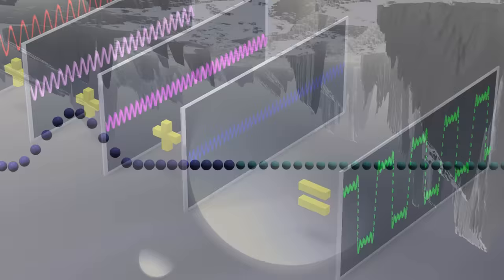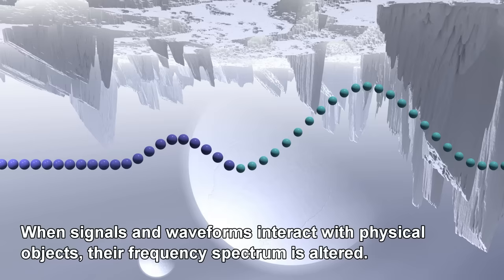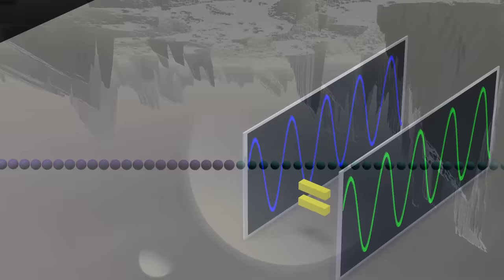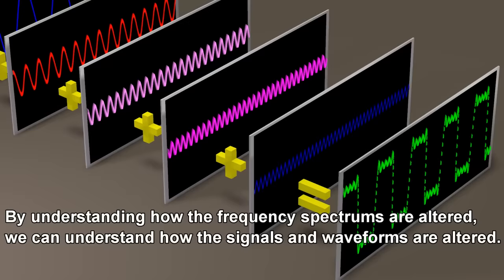When signals and waveforms interact with physical objects, their frequency spectrum is altered. By understanding how the frequency spectrums are altered, we can understand how the signals and waveforms are altered.